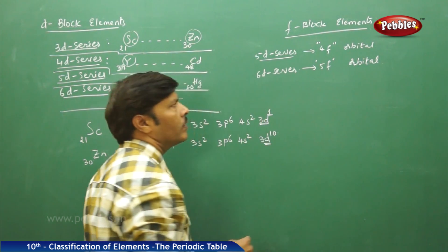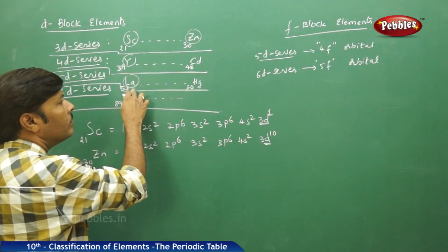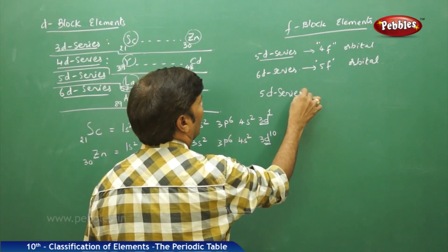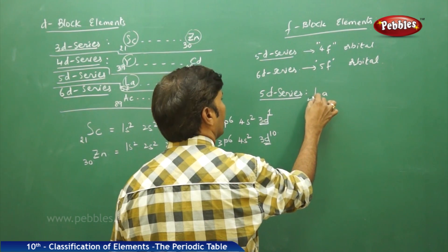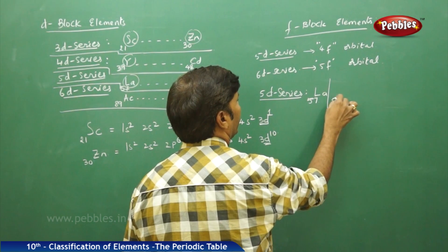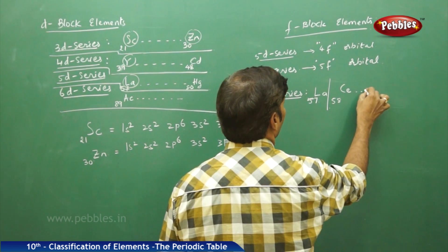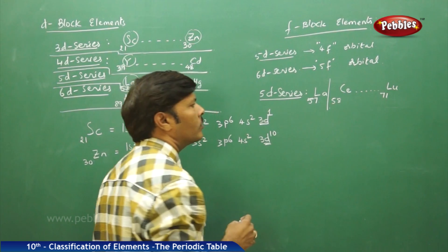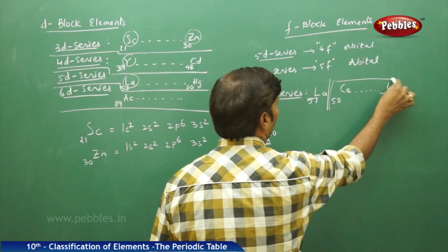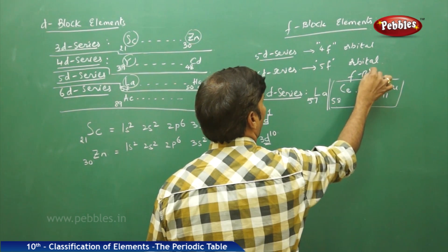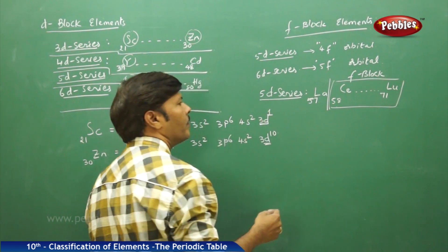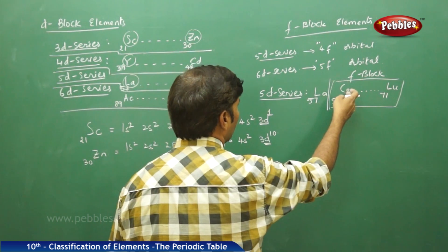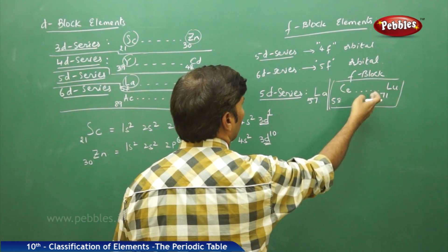In the 5d series, after lanthanum (57), element 58 is cerium. From cerium (58) up to lutetium (71), all these elements belong to f-block, because the f orbital is involved from cerium to lutetium (71).